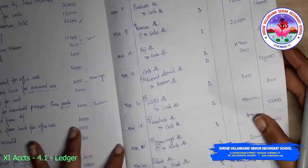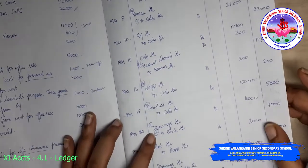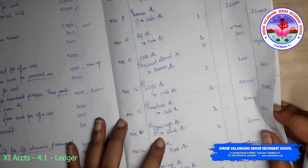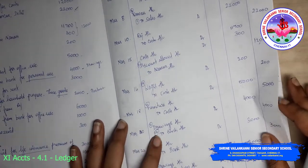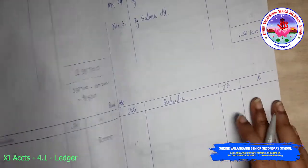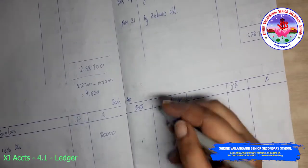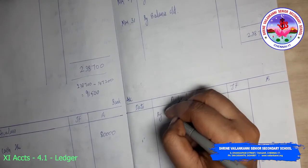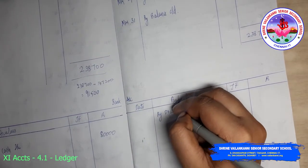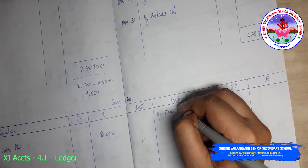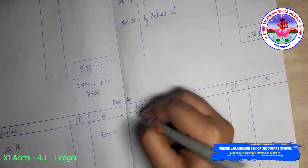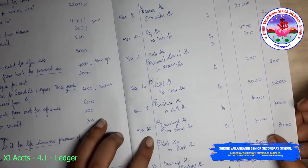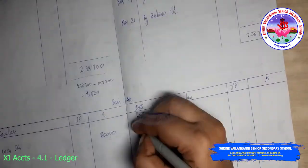The next transaction we have to post is drawings account to bank account. So in bank account you will write 'by drawings'. First we will finish that — by drawings, 2019, the date is March 24, 4000.